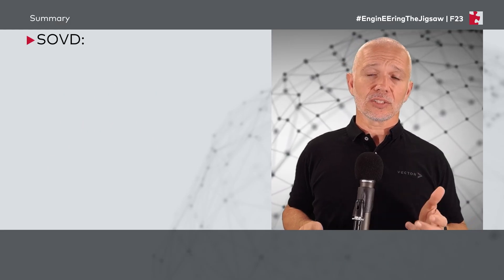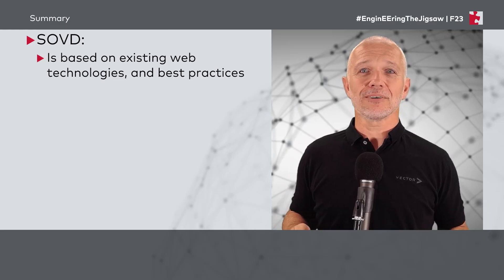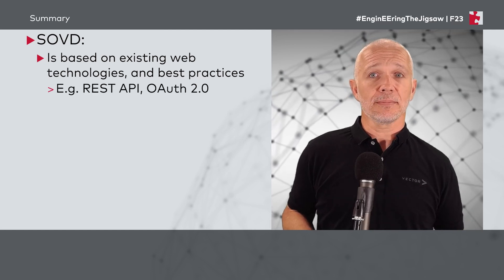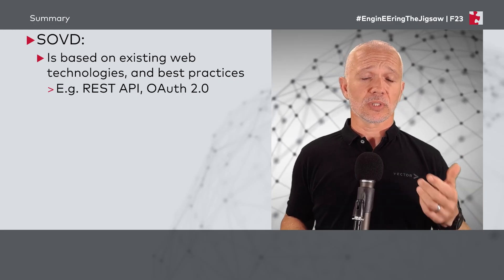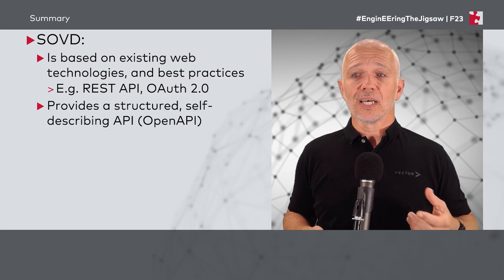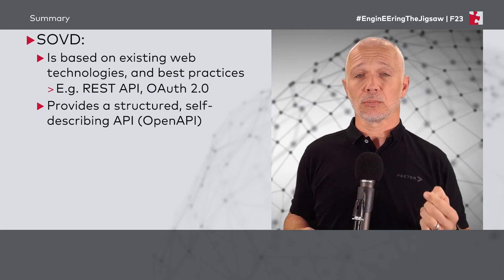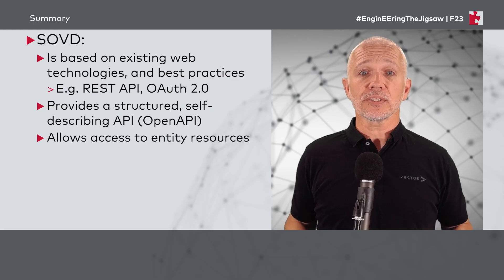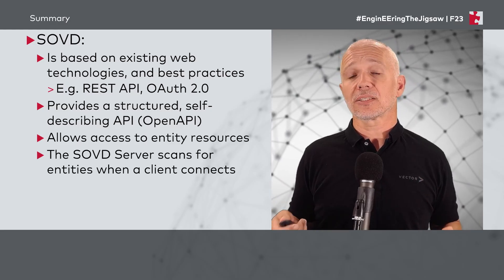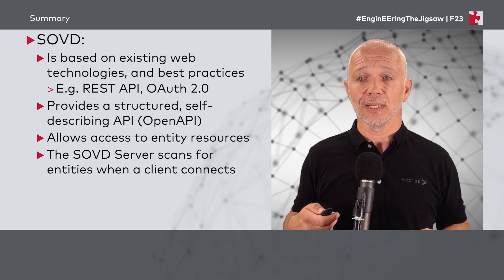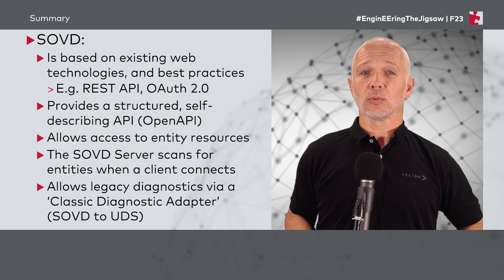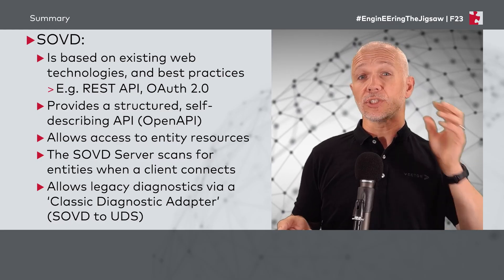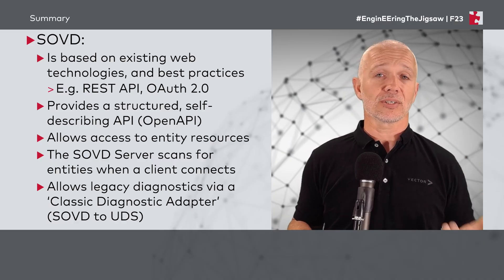As a summary, service-oriented vehicle diagnostics does a lot of really cool stuff. It's based on existing web technologies and best practices: REST APIs, JSON to transfer data with human-readable values, OAuth 2.0 for security, and a structured self-describing API using OpenAPI technology. We have the ability to access entity resources, and the SOVD server scans for entities when a client connects to make sure it's presenting the latest capability. Most importantly, we allow legacy diagnostics via a classic diagnostic adapter that performs a translation from SOVD to UDS and converts UDS responses back to SOVD.